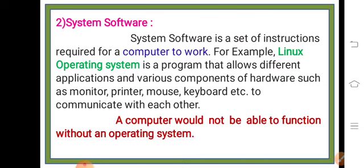There are various types of operating systems like Windows, Linux, Unix, and Mac OS. Without application software, a computer can still perform, but without system software, a computer cannot perform at all. A computer will not be able to function without any operating system — at least one operating system must be installed on your computer system.